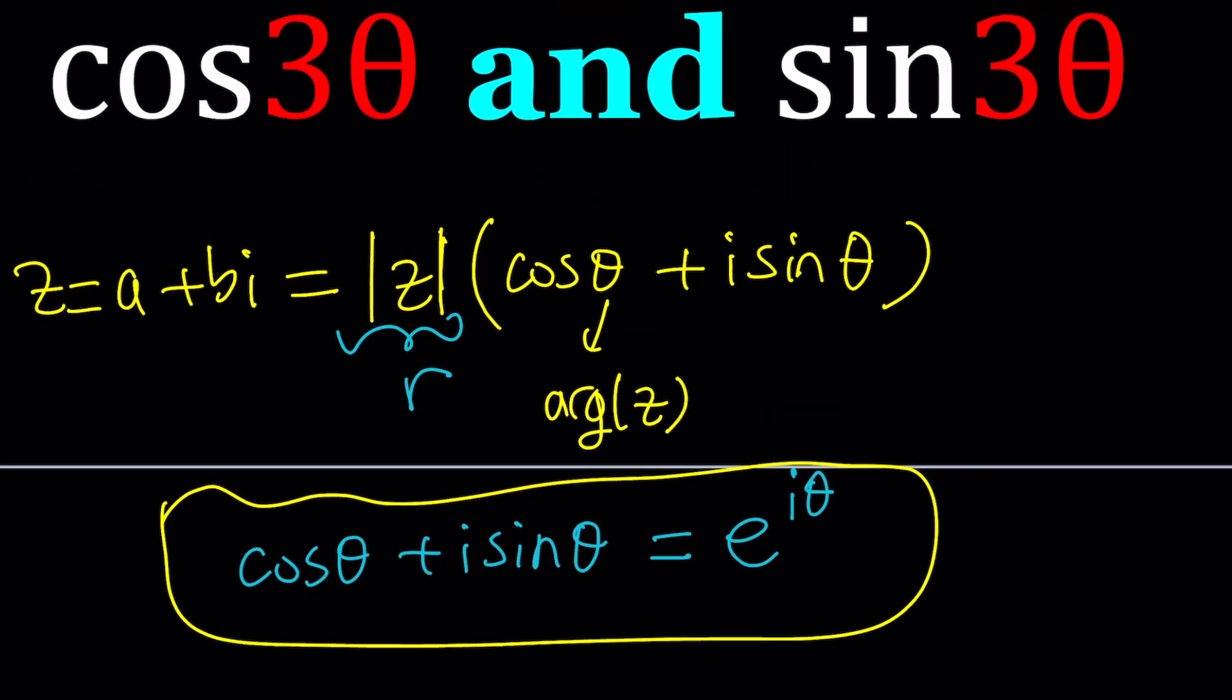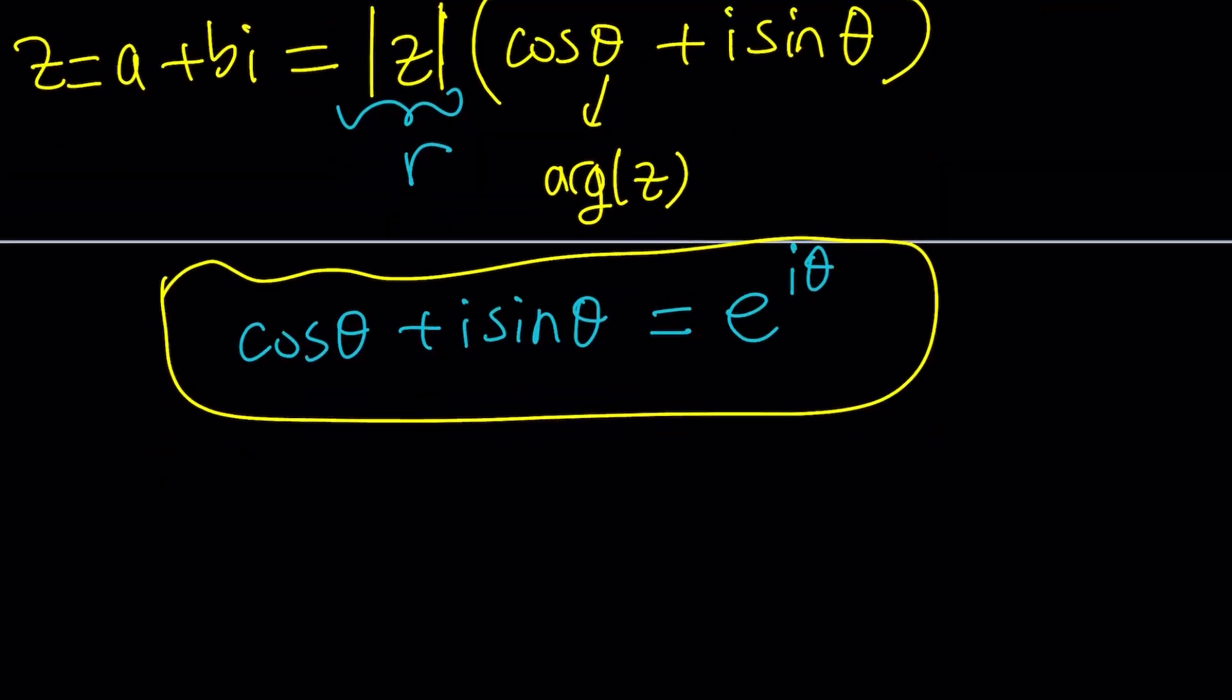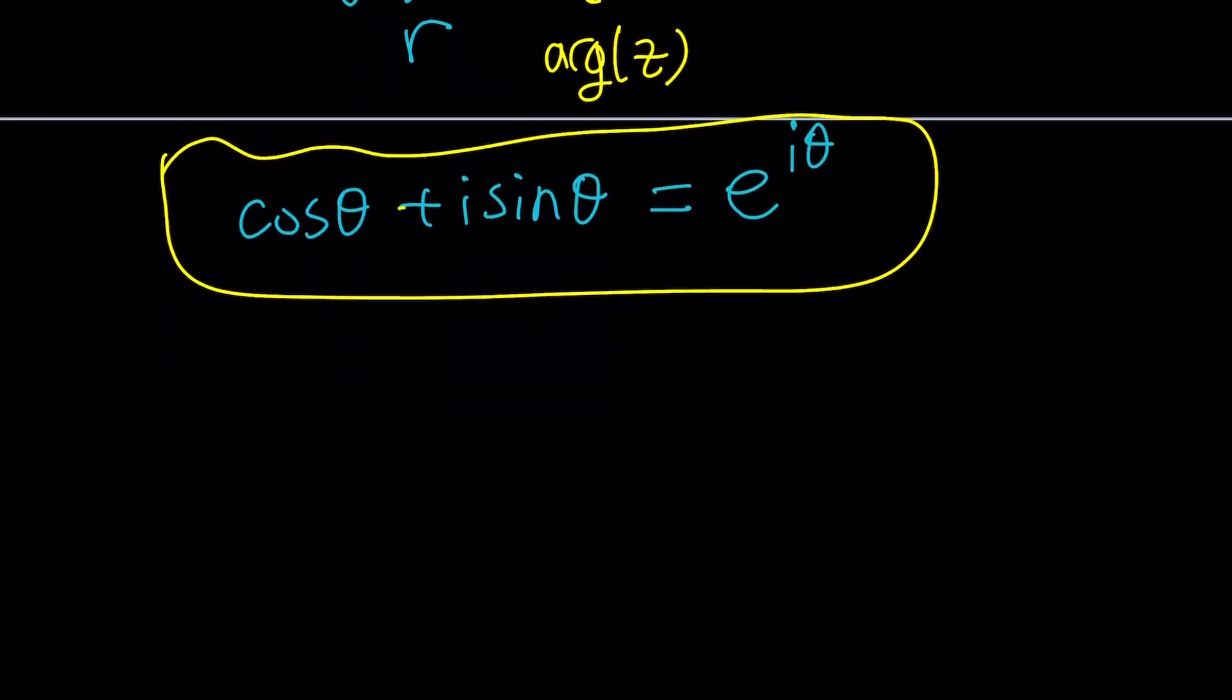Now how do we go from cosine theta plus I sine theta to cosine 3 theta and sine 3 theta? That's where Euler's formula comes in. So here's what we're going to do. We're going to go ahead and start with cosine of 3 theta plus I sine 3 theta.